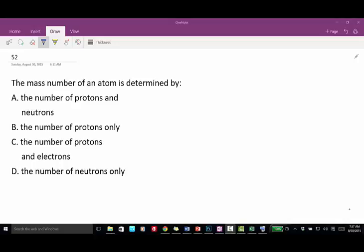The mass number of an atom is determined by A, the number of protons and neutrons, B, the number of protons only, C, the number of protons and electrons, and D, the number of neutrons only.